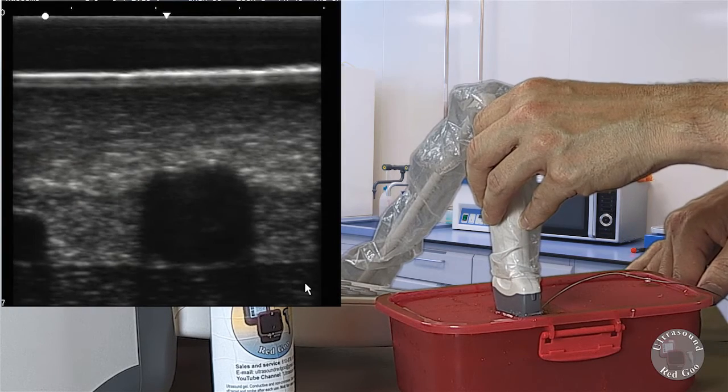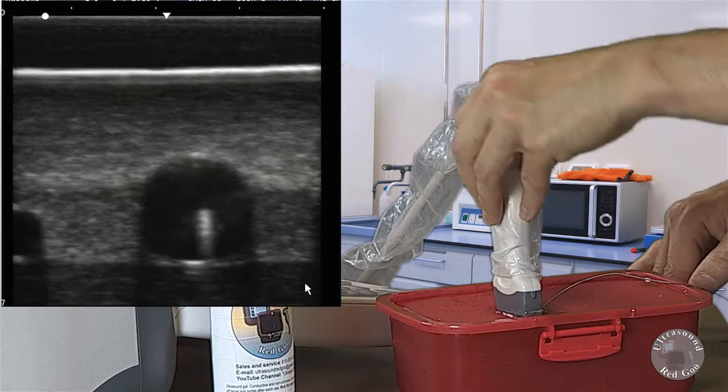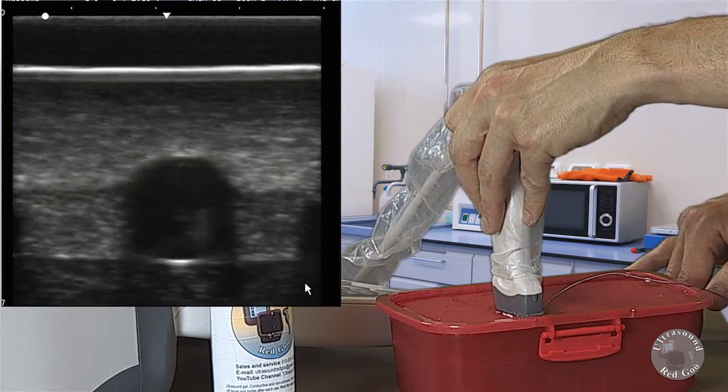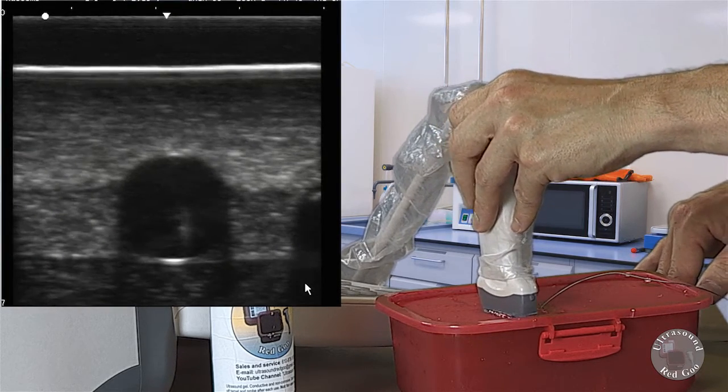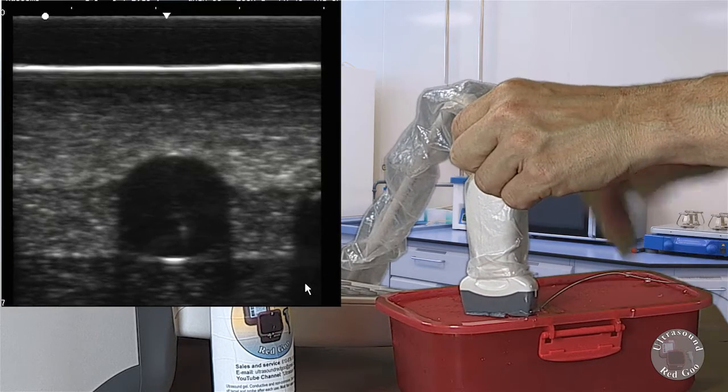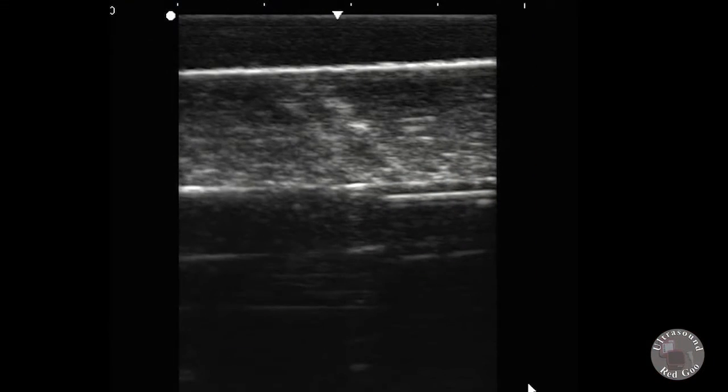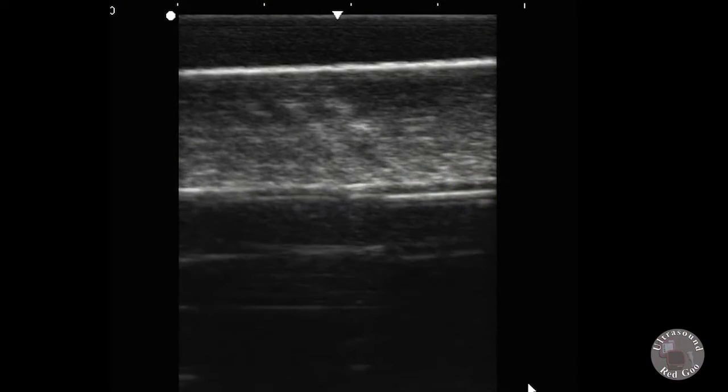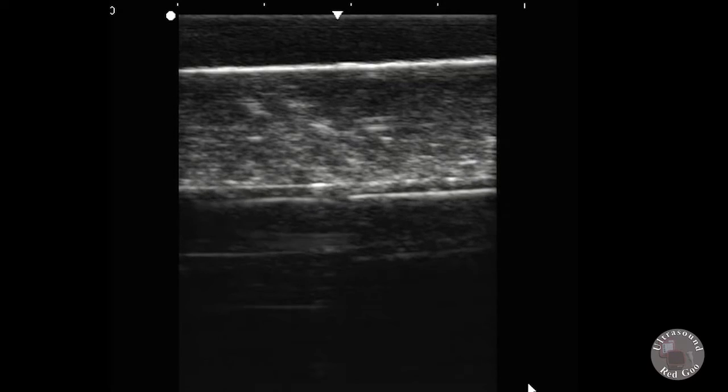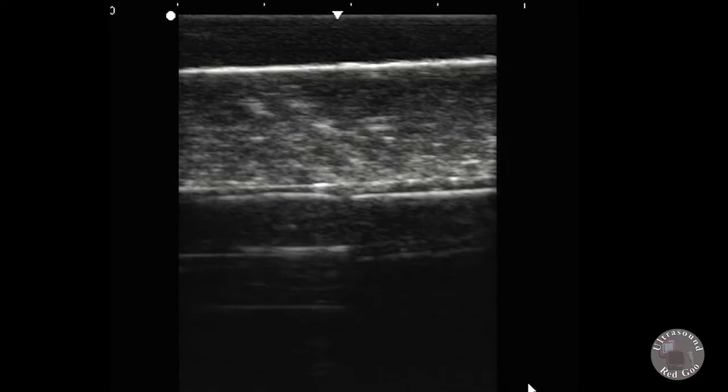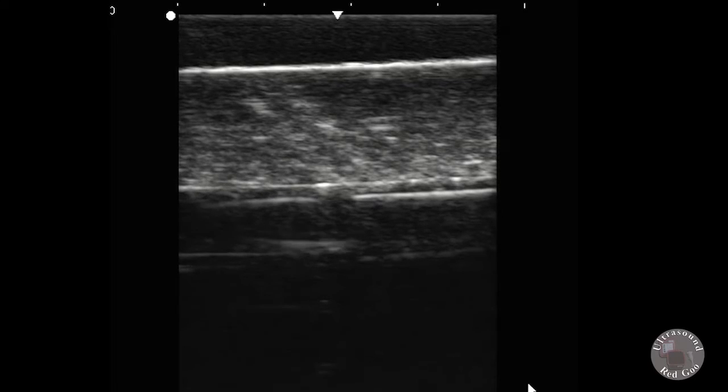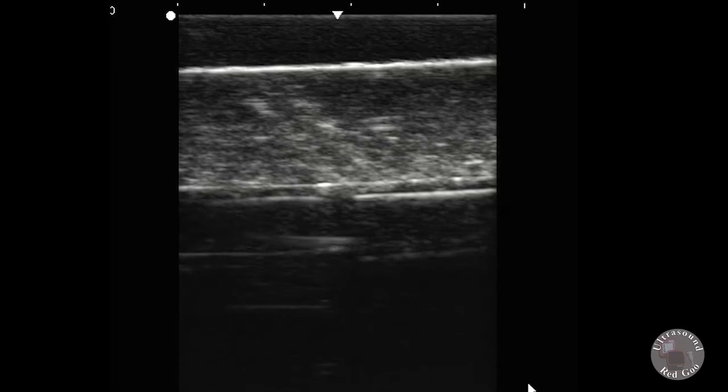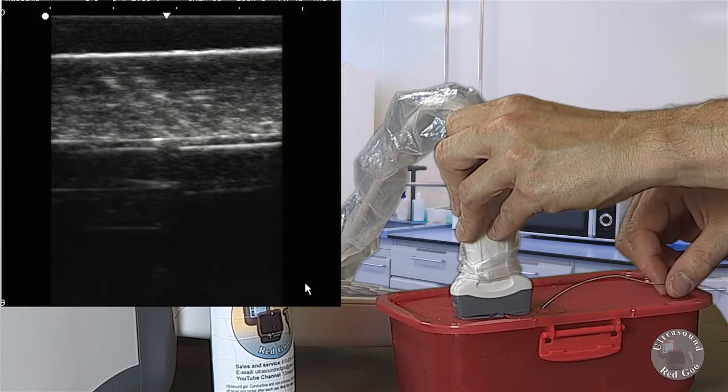So what I can do is I can assess the wire in the lumen of the vessel with both the out of plane and the in plane technique. So I'm going to rotate my probe 90 degrees - the probe marker is going to be facing me at this time - and I'm going to find the wire right there. I can just kind of move it around and you can see it on the screen moving. Okay, so that's in plane validation of where the catheter is.